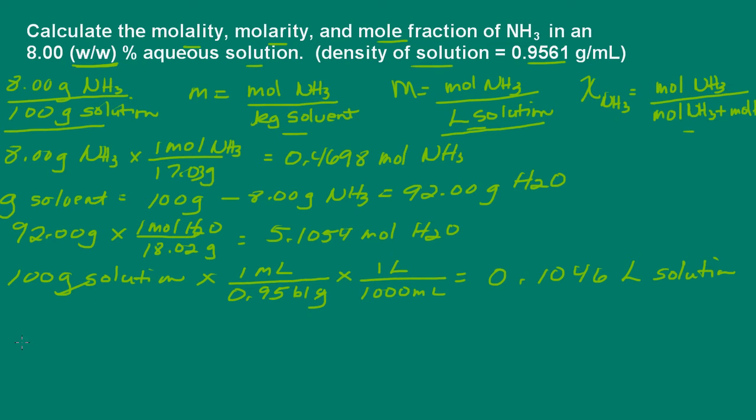Okay. I'm all set to go then. So let's first calculate the molality. And again, molality is moles of solute over kilograms of solvent. So we have moles of ammonia, which is 0.4698 moles of ammonia divided by, well, we have 92 grams of solvent, of water. So we can convert that to kilograms. So 92 grams of water. And we know that 1,000 grams are 1 kilogram. So this is going to give us 5.11 molal.